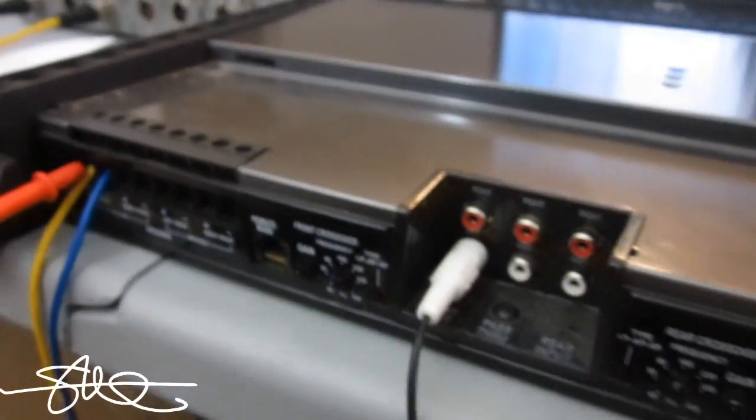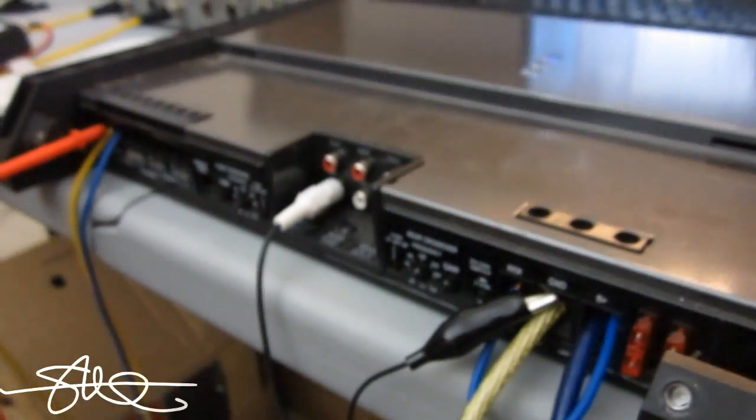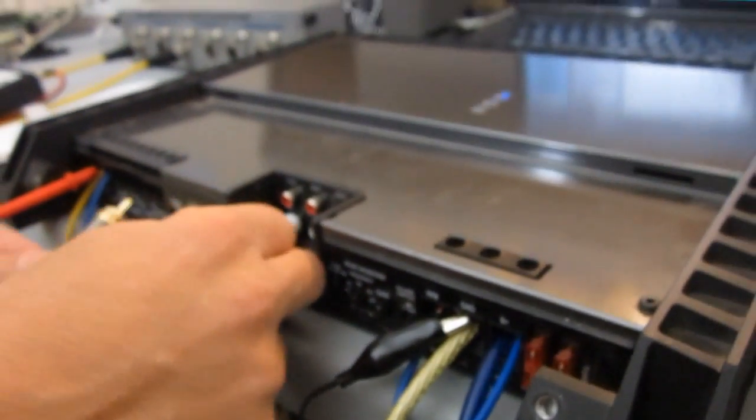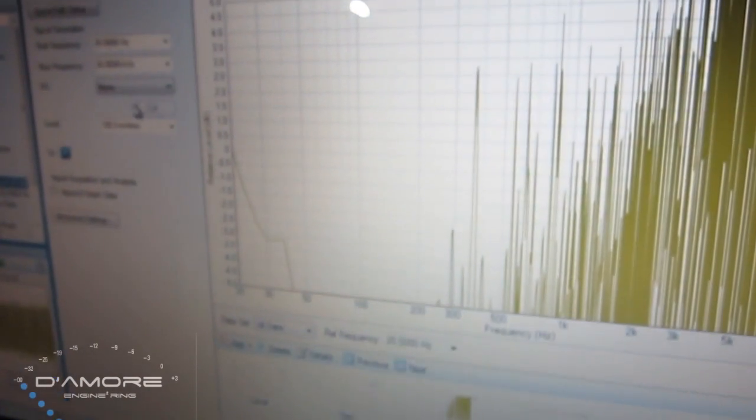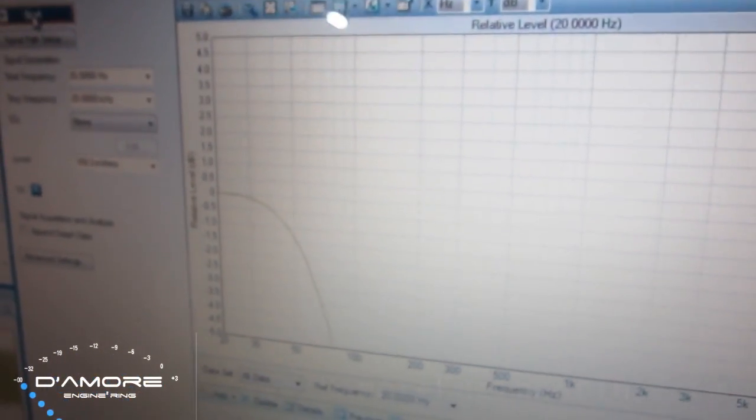And right about there is 63 Hz according to the CC1. So let's just find out about that. We can measure it on the audio precision real quick here. And see how accurate the CC1 is. So I'm just going to run a little sweep. Frequency response sweep.